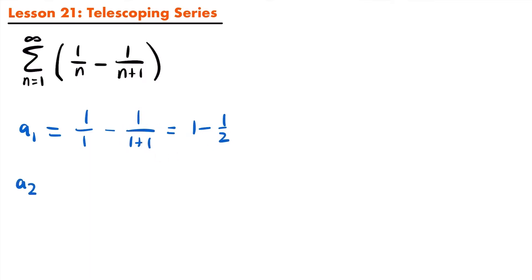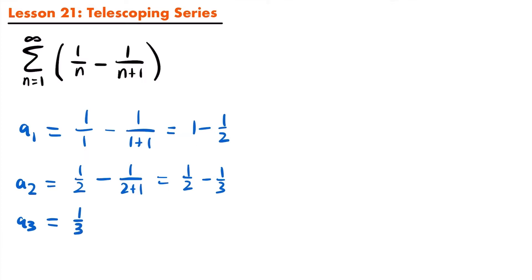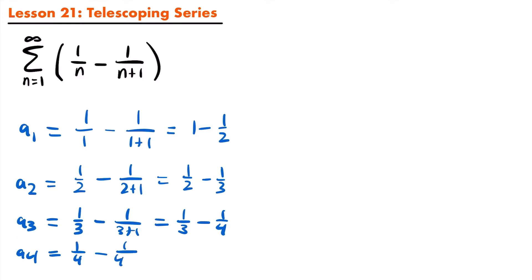Now let's take a look at a sub 2. That will be equal to 1 half minus 1 divided by 2 plus 1, which equals 1 half minus 1 third. Then a sub 3 equals 1 third minus 1 fourth. And a sub 4 equals 1 fourth minus 1 fifth. So those are the first four terms of this series, a sub 1 through a sub 4.